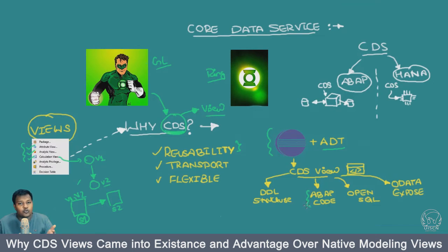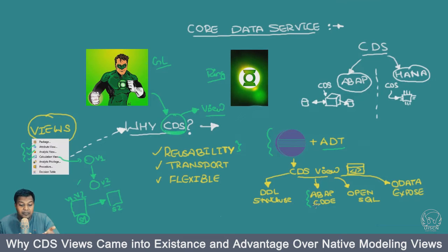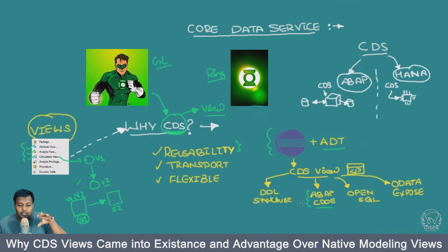I can also use a CDS view inside ABAP code. There are two ways of implementing a CDS view: either you can call a CDS view directly, or there is also something called AMDP. In AMDP you create a class with methods, and those methods internally call CDS views to expose functionality through object-oriented patterns. This gives a layer of abstraction — if you're an ABAPer you don't need to be directly exposed to CDS views; you just call the methods and they give you the required data. That's how an ABAP program can use a CDS view, or you can call CDS views directly in ABAP code.